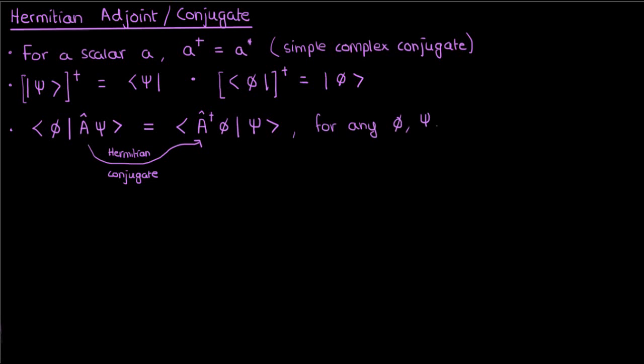If you don't like switching the location of the operator from ket to bra, another way to define the Hermitian conjugate is to use the following definition. Here, in going from the regular operator A hat to its Hermitian conjugate A hat cross, all you do is switch the locations of the phi and psi, and take the complex conjugate of the right-hand side.